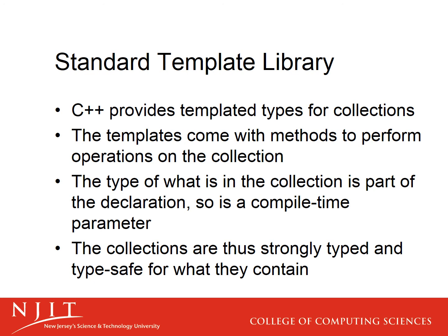C++ provides these templated types for collections. Those of you who are Java programmers are familiar with this idea of templates — angle bracket enclosed type names is how you indicate that something is a template. All of these different collection types come with methods to perform operations on the collection, and the type of what's in the collection is part of the declaration. The important thing to note is that the type is a compile-time parameter — it has to be known at compile time, not at run time.